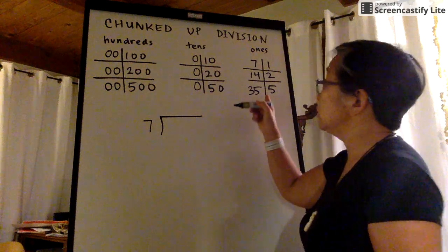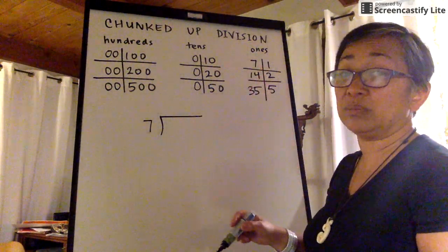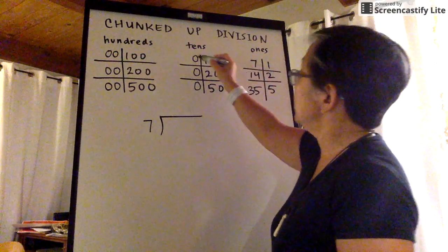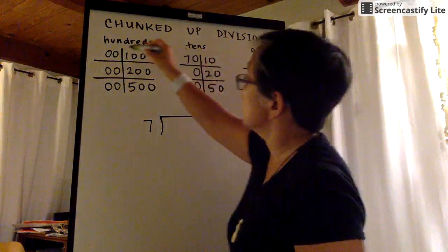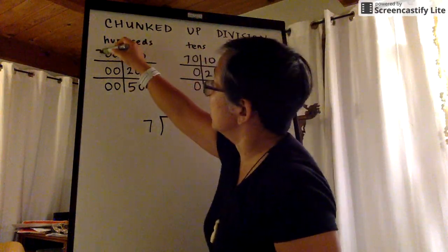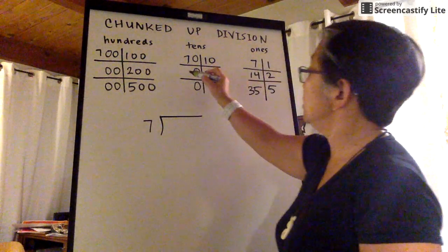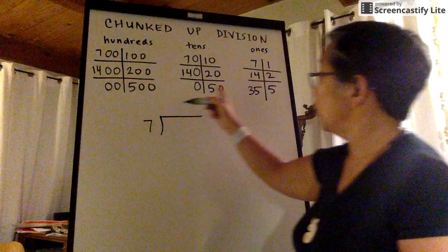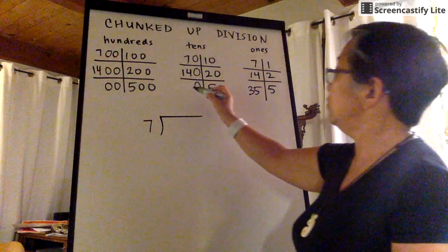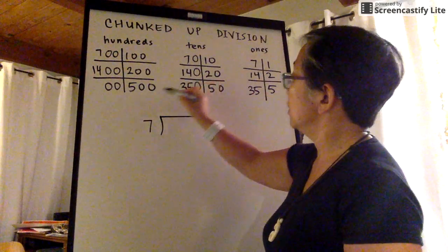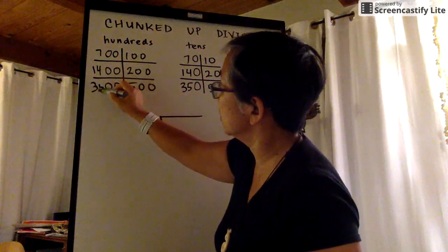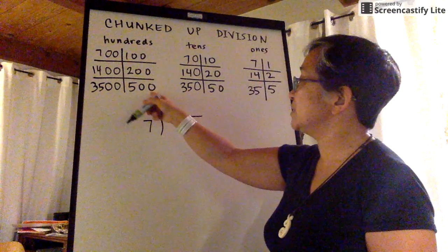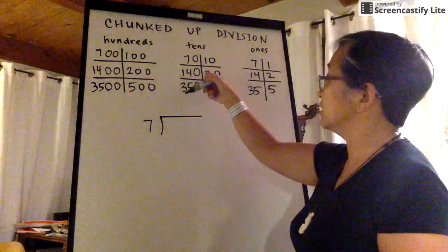And take whatever numbers are here and just scoot them to the left. So seven, 14, 35 — because I know that seven times that is that, and seven times that is that.